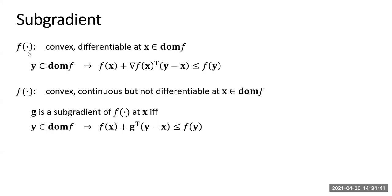What is the sub-gradient? We have a convex differentiable function, differentiable at a point x in its domain. If y is another point in its domain, then since f is a convex function, this property must hold: f(x) plus the gradient of f(x) transposed times (y minus x) must be less than or equal to f(y).